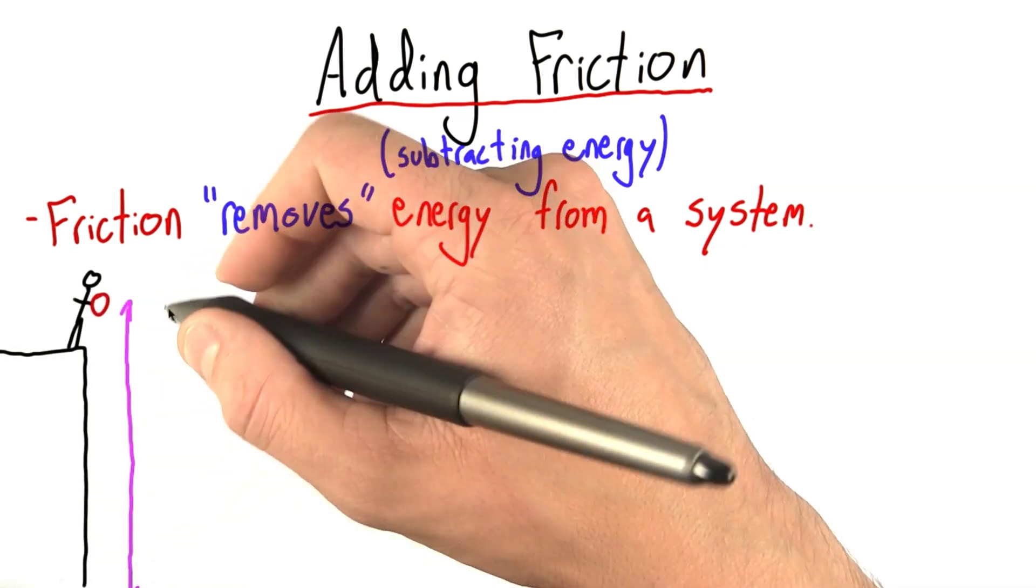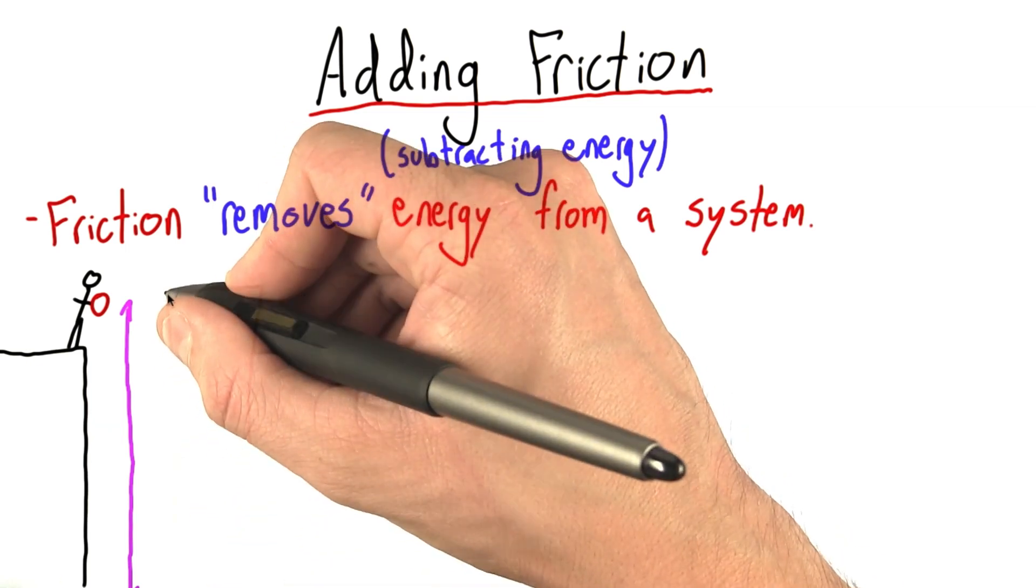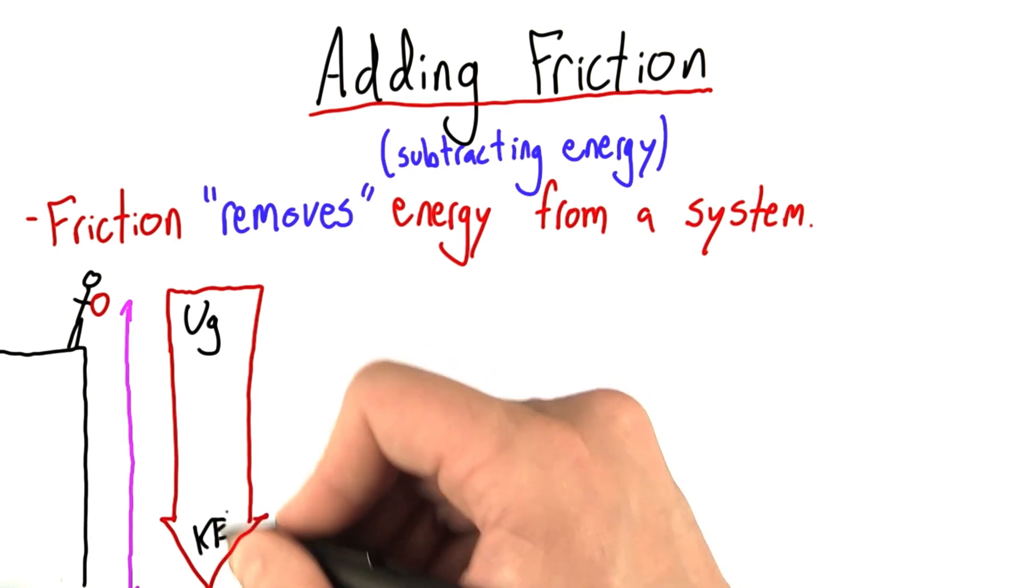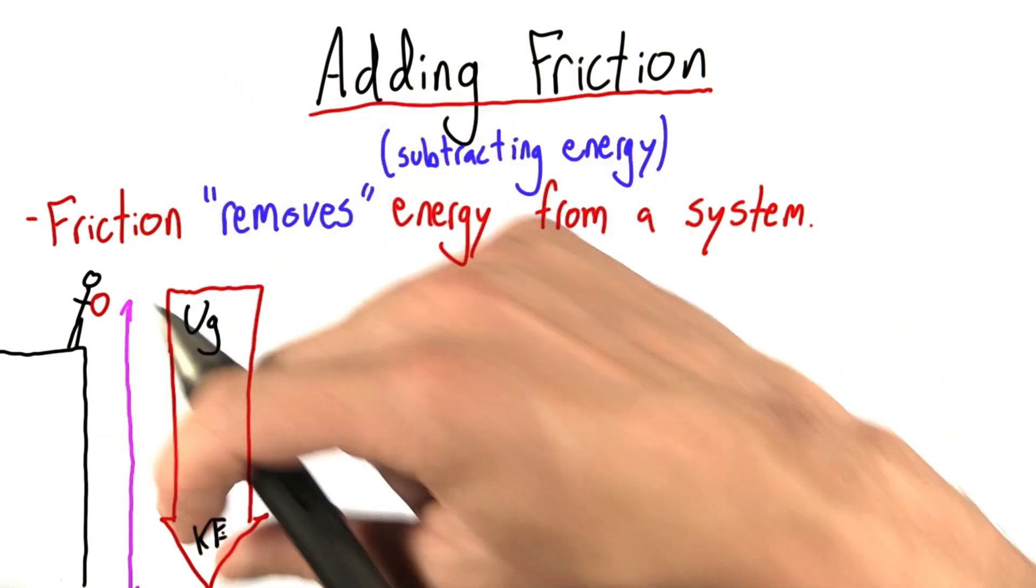Well before when we thought of, let's say, a ball dropping from some height, we could think of this as energy converting from gravitational potential to kinetic energy as it moved down. All of the gravitational went to kinetic.